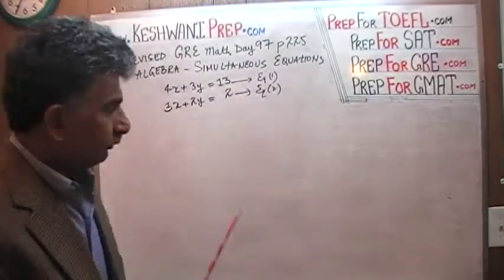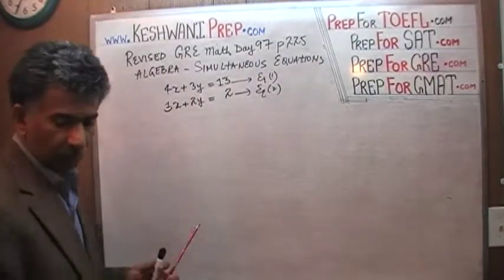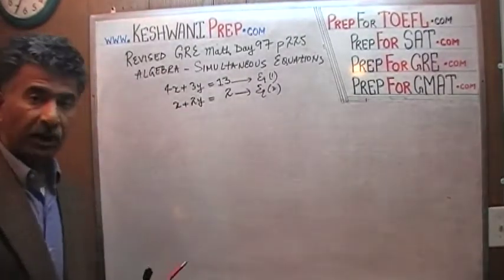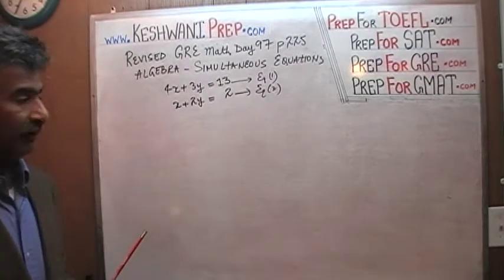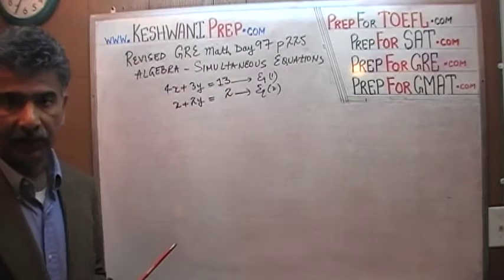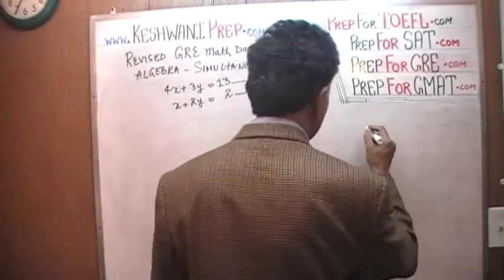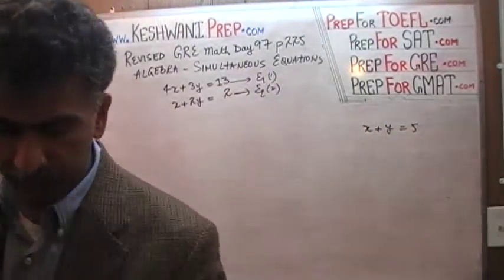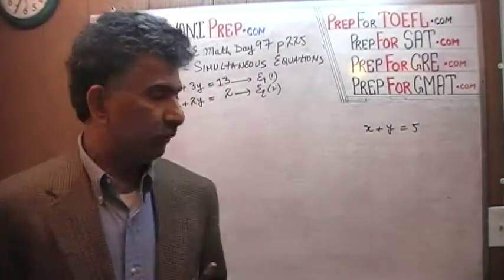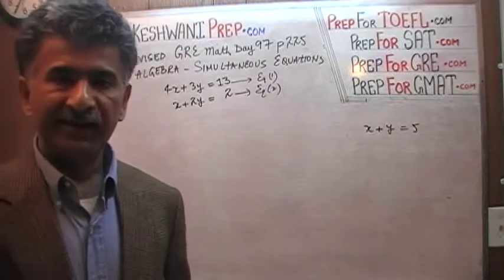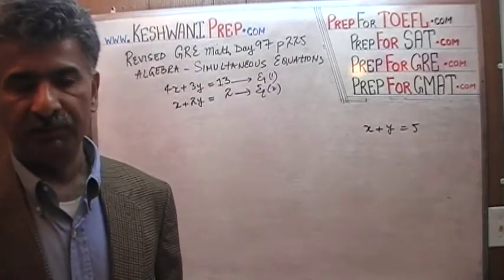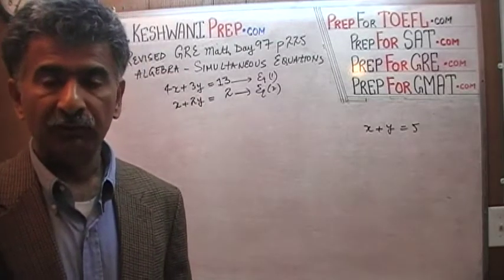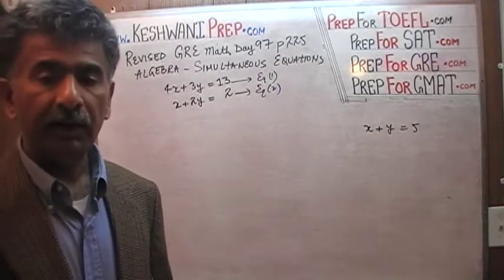We are given two equations: 4x plus 3y equals 13, and x plus 2y equals 2. Our job is to find the values of x and y that will satisfy both equations at the same time. For example, if we are told that x plus y equals 5, what values of x and y will satisfy this equation? The answer is there are infinite possible values of x and y that will do the job — infinite possible values.